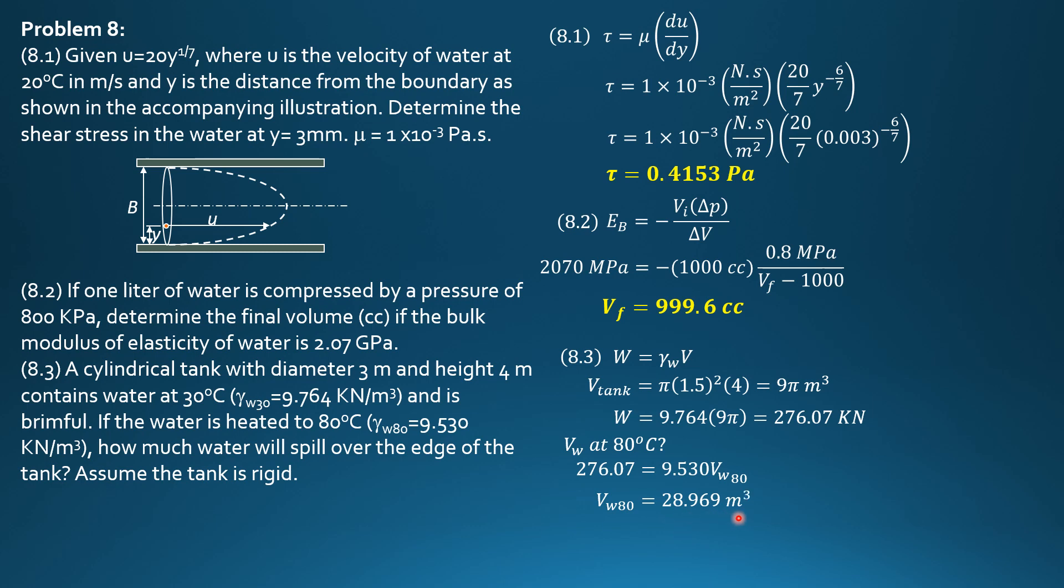Therefore, the volume spilled is 28.969, volume at 80 degrees Celsius, minus volume of the tank, which is 9 pi at 30 degrees Celsius. Volume spilled is 0.6947 cubic meter. Thank you.